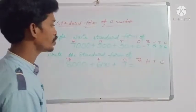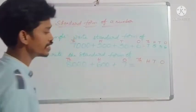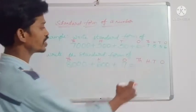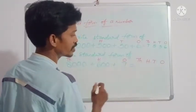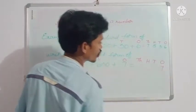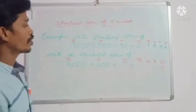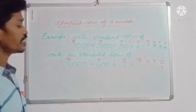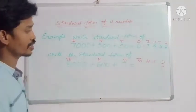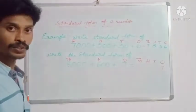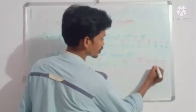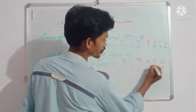Now you have to write the digit under these places. What is the digit in ones place? Seven. Here, there is tens place — there is no tens digit. Then what you have to do? You have to write zero under tens place. Zero.